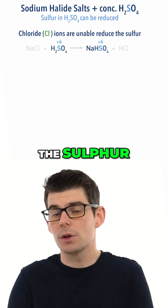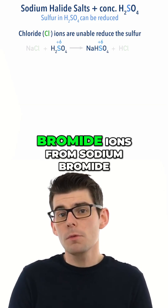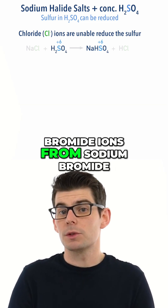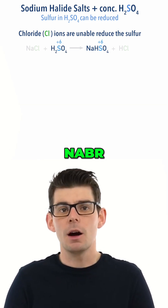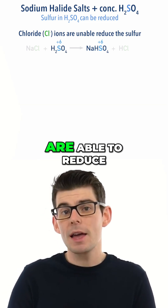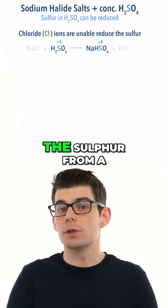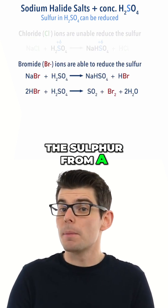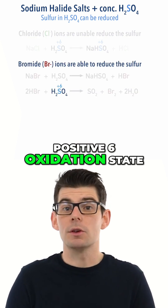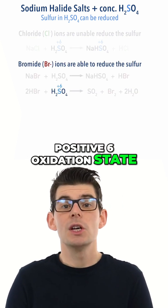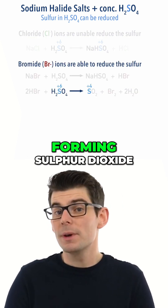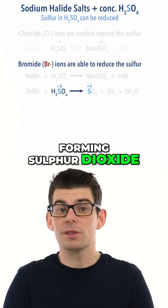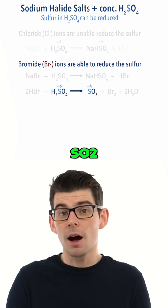Bromide ions from sodium bromide NaBr are able to reduce the sulfur from a positive 6 oxidation state to positive 4, forming sulfur dioxide SO₂.